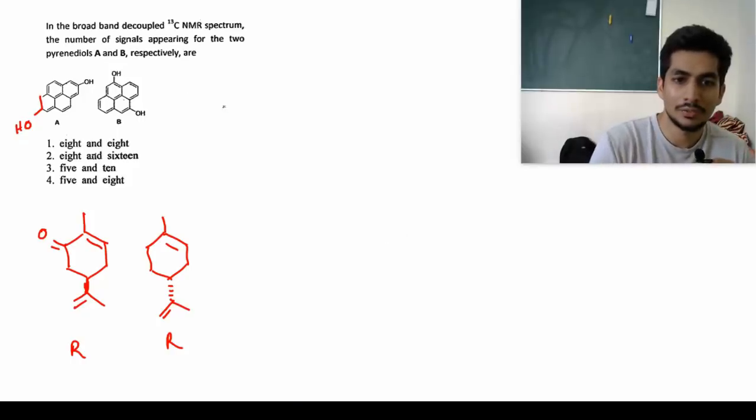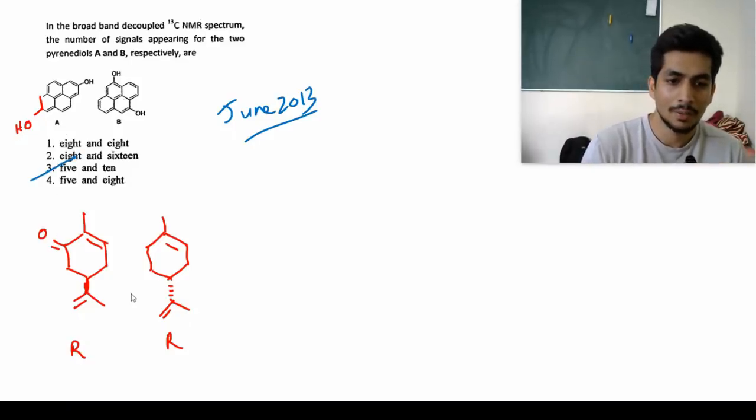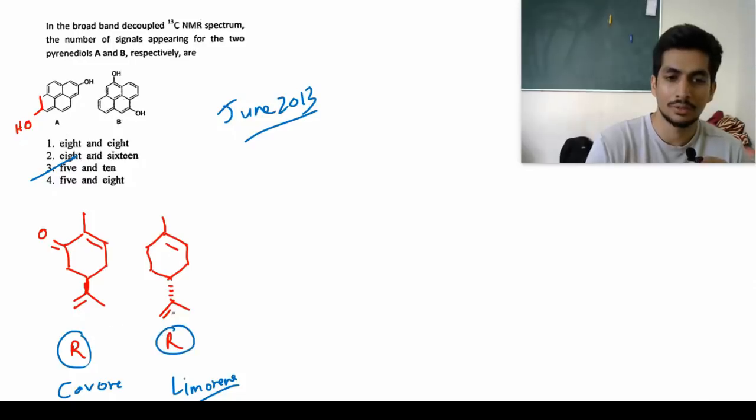There was a question from June 2013 CSIR NET, the answer is 5 and 10 - 13C NMR question. Then there was this question where carvone was given to us - two isomers of carvone and two isomers of limonene - and we had to find whether there will be R and S. It's very simple: for this it will be R and for this it will be again R, these two are R so the other two will be S. Hydrogen is below the plane so you just find out the priority of all these groups. This carbon will be given priority number one, then this carbon will be given two and this carbon will be given three.